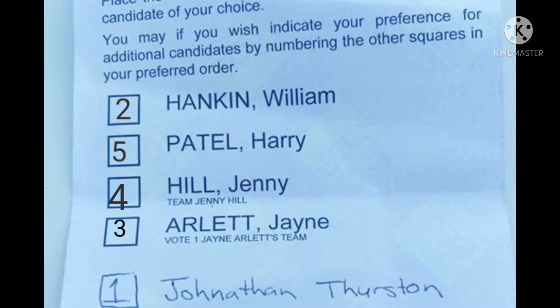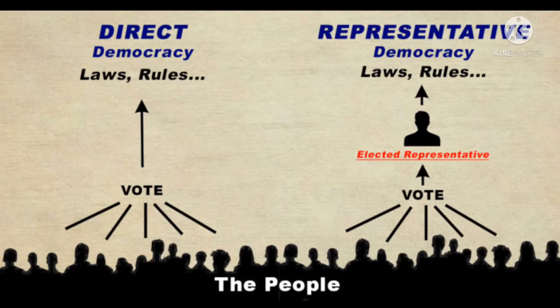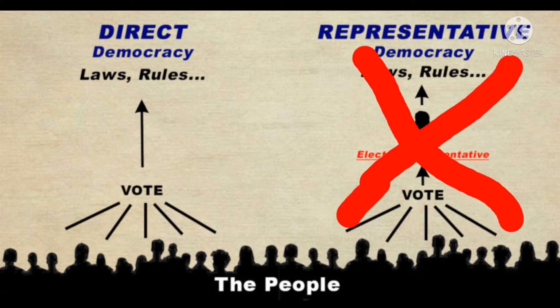I'm not sure if that last version is an informal vote. I'll discuss that a bit later. Putting your own name on the voting paper, you're voting for yourself. Saying you don't want anybody else to represent you. That you wish to make decisions yourself.